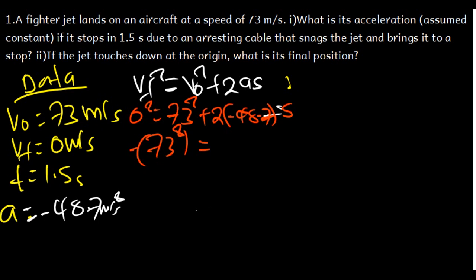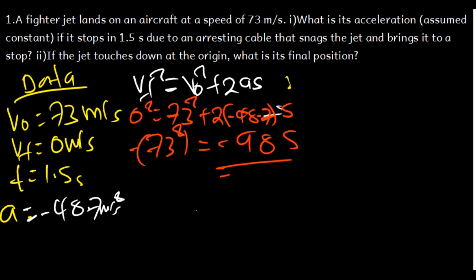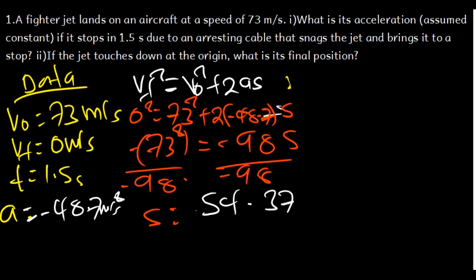The negative and negative cancel. We have 73 squared divided by 96. Calculating: 73 squared is 5329, divided by 96. We get 54.37, which we can express as approximately 54.4 meters. Using the second formula should give us the same answer.